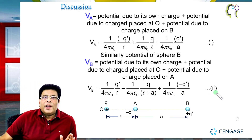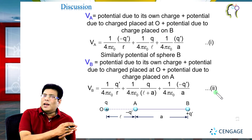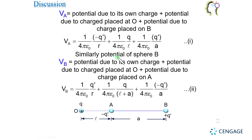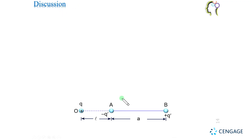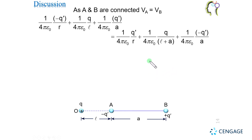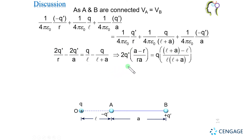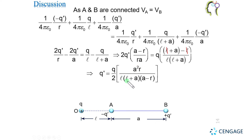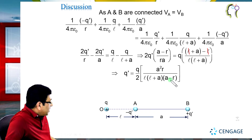Since both spheres A and B are interconnected by the thin metallic wire, the potential of A and the potential of B must be equal. So we write Va = Vb, equating equation 1 and equation 2. The 1/4πε₀ factor cancels, and we are left with an equation having the unknown q dash only. After solving, we get: q dash = (q/2) × [a² × r] / [l × (l + a) × (a − r)].